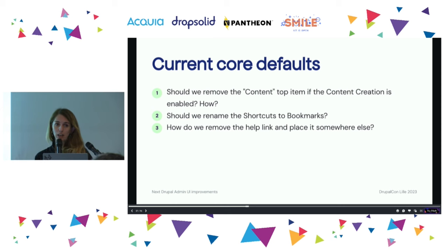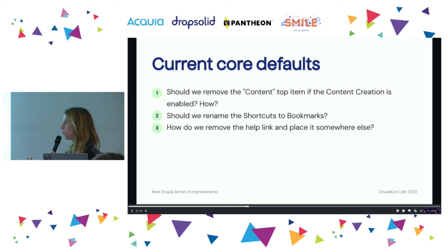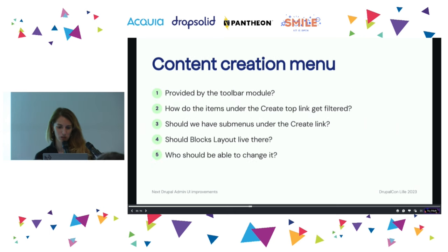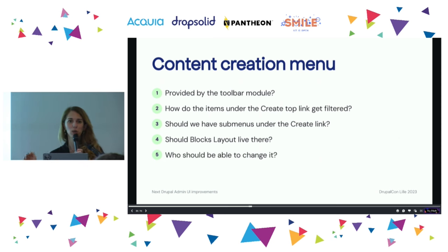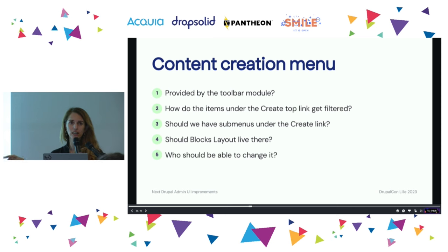Should we rename shortcuts to bookmarks? It's been proven in user tests that it's better for a lot of users — bookmarks are more user-focused than shortcuts. What do we do with help? Is the content creation module going to be provided by the toolbar, or something completely independent? How do items go under 'create'? All content types? How many people have more than 20 content types — then add taxonomies, blogs, users, media, entities. How do we manage that amount? The goal is that it's a quick way to create content, so we need to discuss how to manage that and whether we should have submenus in the create section.